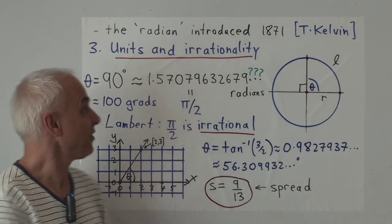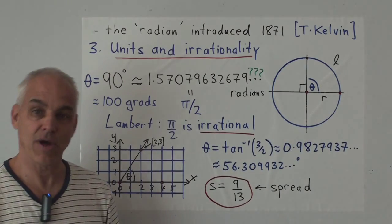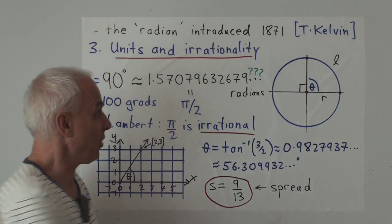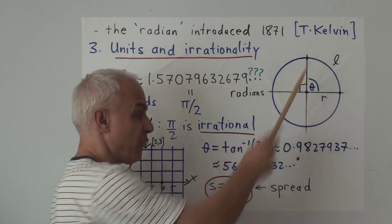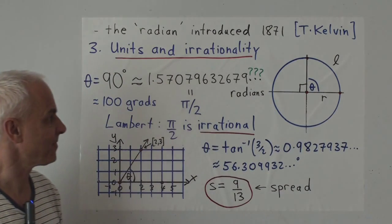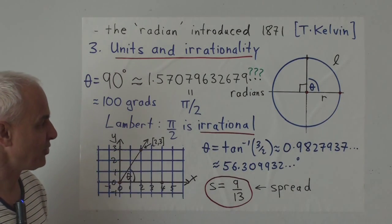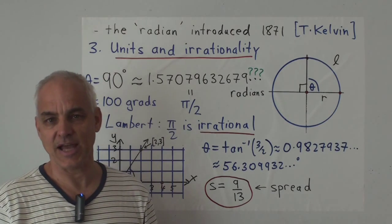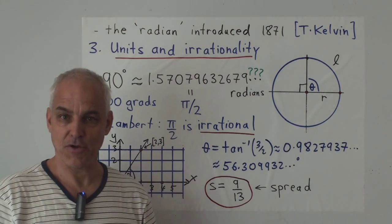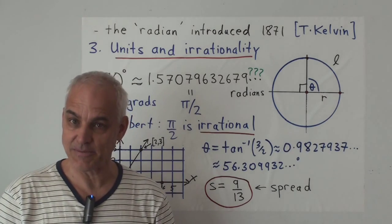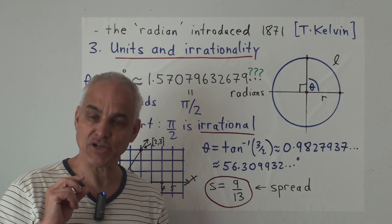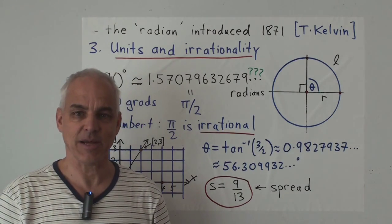And it's also interesting to note that the term radian was introduced relatively late in the story, only in 1871 by the brother of Lord Kelvin. Which brings us naturally to the next problem associated with angles, which is that concerning units. There are a number of different unit systems to choose and there are irrationalities associated to some of these systems.